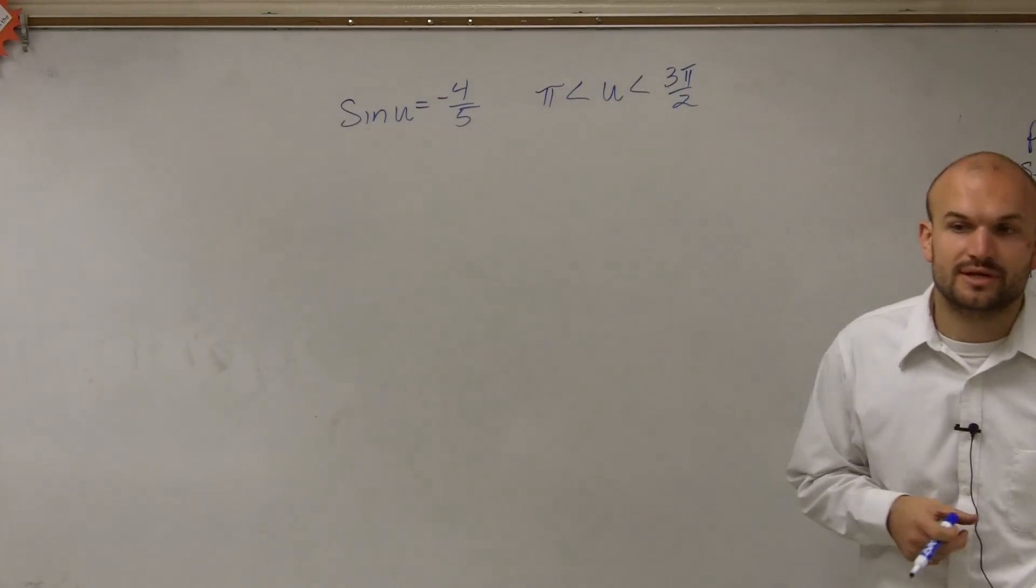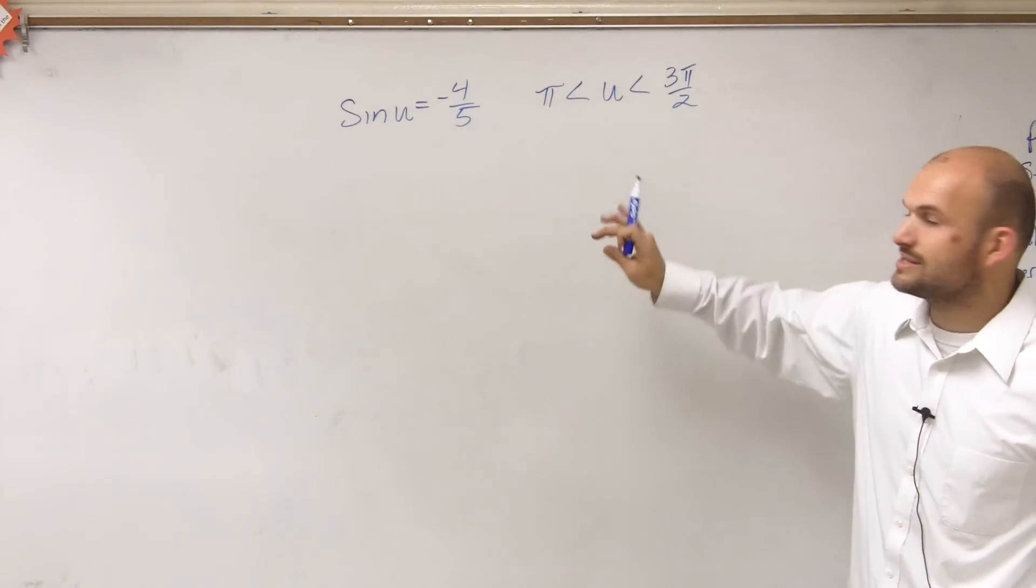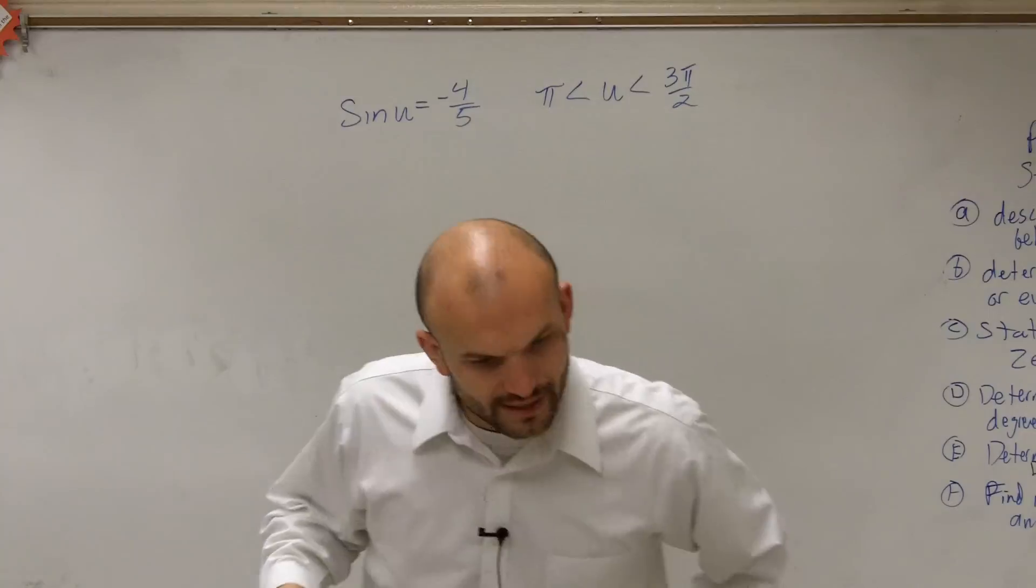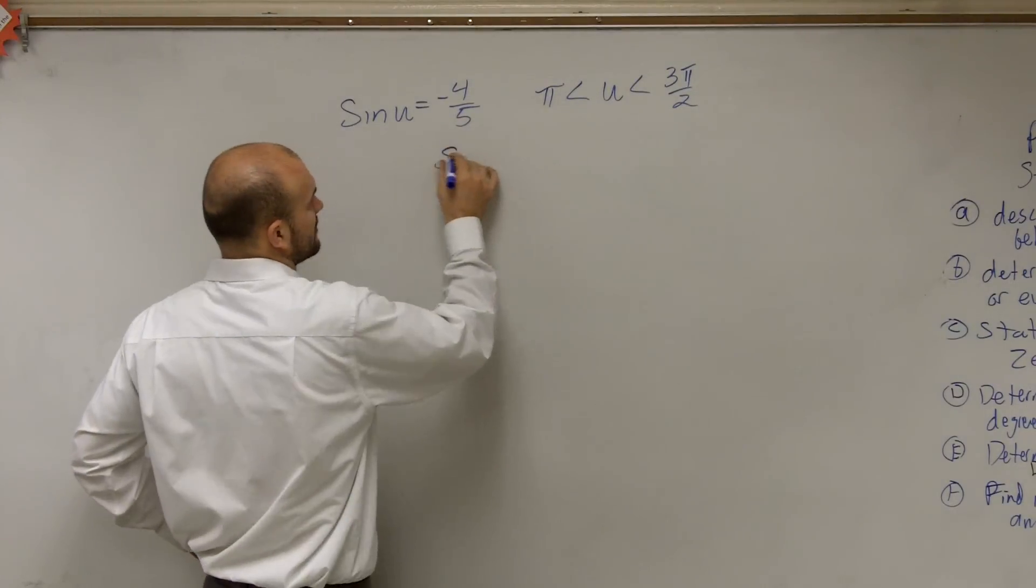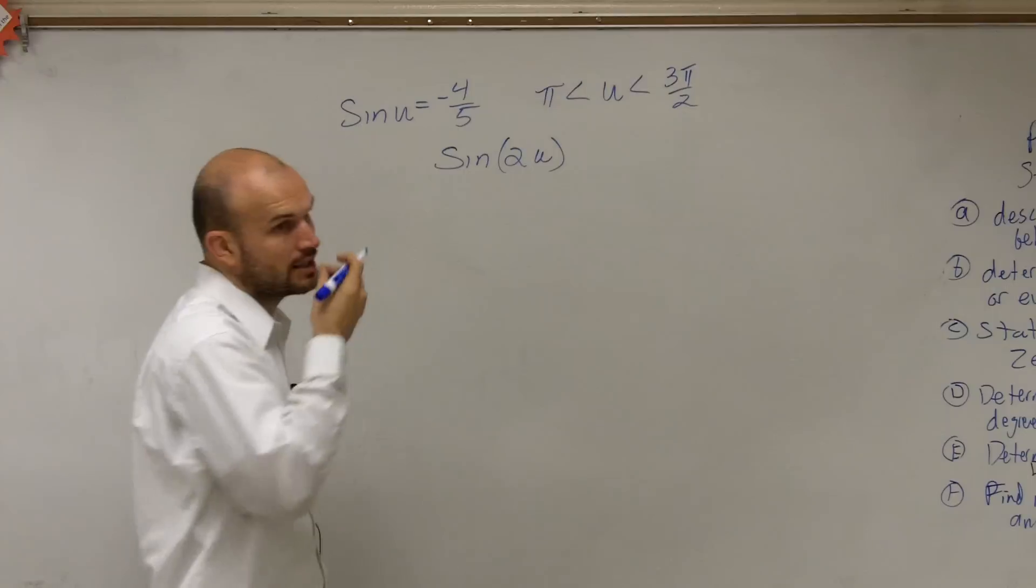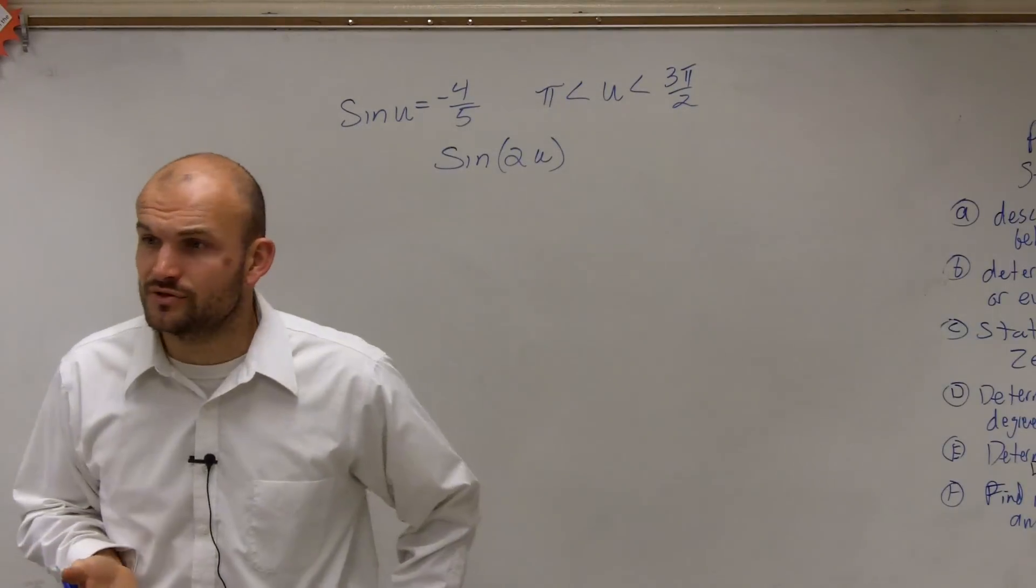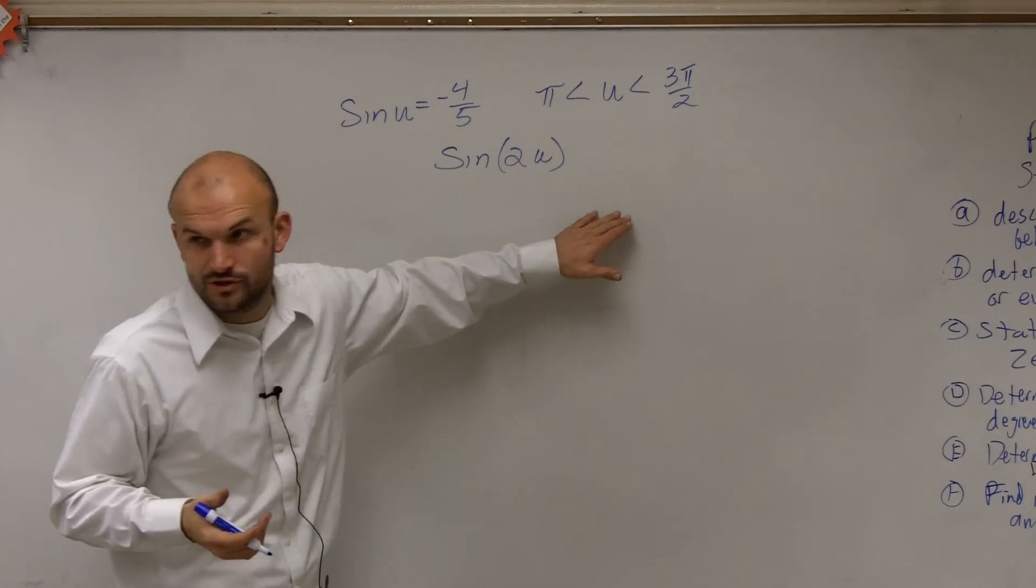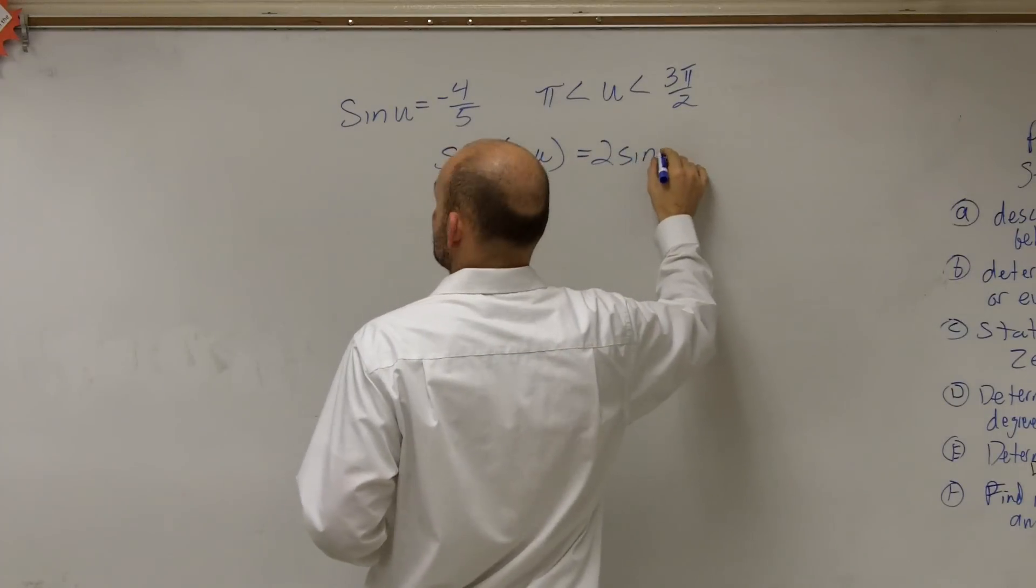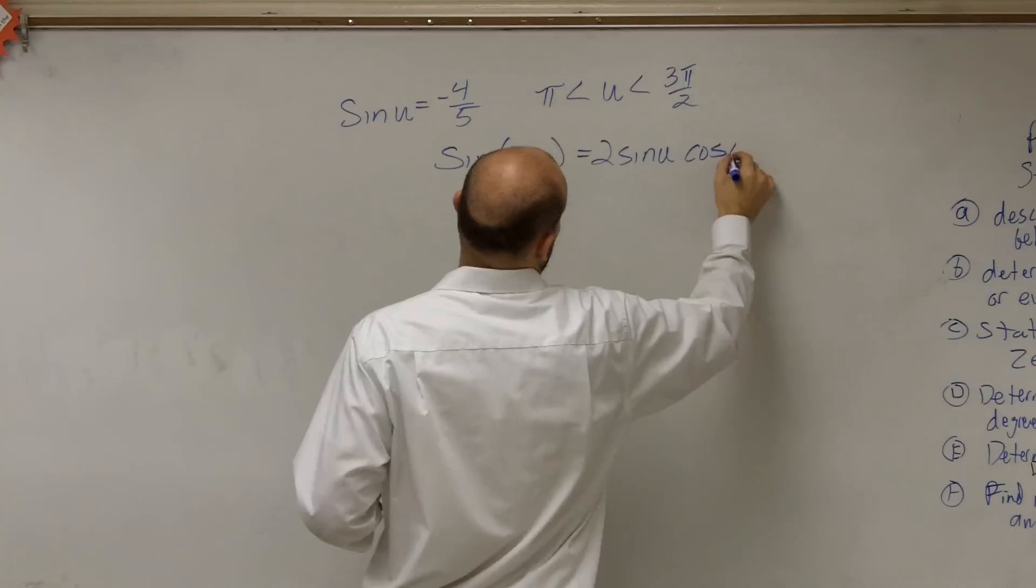So what I need to do to look at this, Elizabeth, is I notice what they're asking me to evaluate for is to find the sine of 2u. So I need to evaluate for the sine of 2u. Well, the formula for the sine of 2u, which is on page 287, we know is going to be 2 sine of u cosine of u.